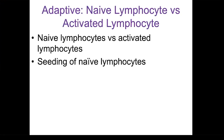The movement of the naive lymphocyte into the secondary lymphoid organs is called seeding. Think about throwing out seeds if you are trying to plant a garden. They are moving out from the primary lymphoid organ in this seeding process, but they haven't encountered their antigen yet, so they are still naive.